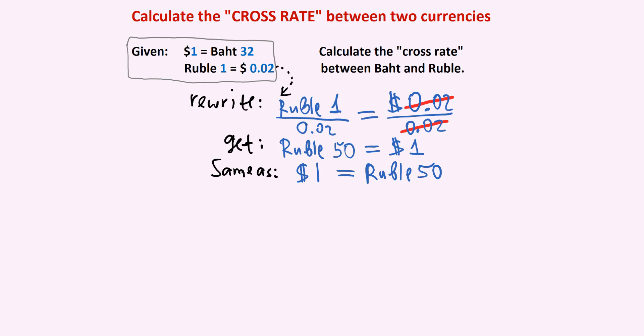And so the reason we did these first three steps is only so that the exchange rate between the dollar and the Russian ruble looks similar to the exchange rate that we are given between the US dollar and the Thai baht. Both start with $1 equals on the left-hand side, right? And so we take the exchange rate for the dollar and the baht and then the ruble and put them together. So now it's as if we are given the following: $1 equals 32 baht and $1 equals 50 rubles.